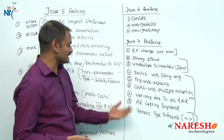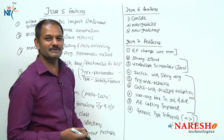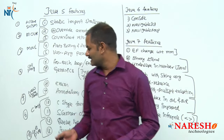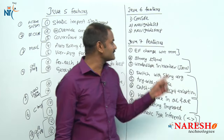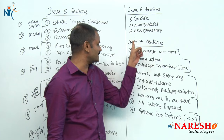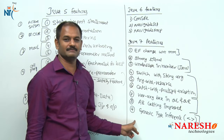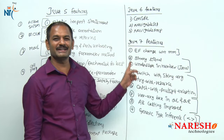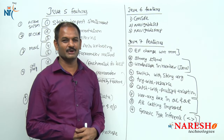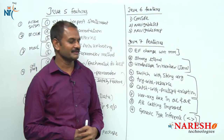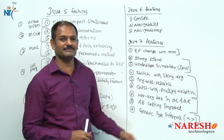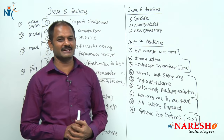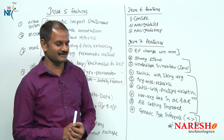So totally, up to Java 7: 13 features in Java 5, 3 in Java 6, and 9 in Java 7 — that is 25 features in total across Java 5, 6, and 7.